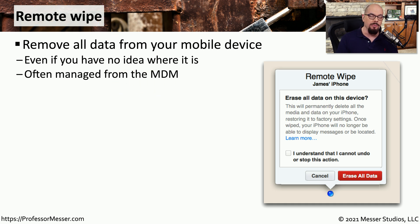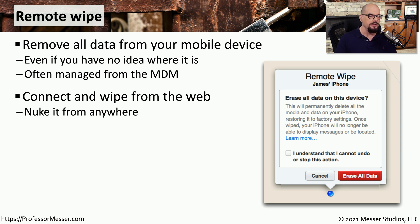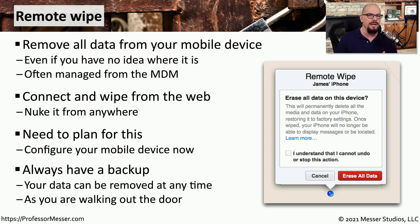Remote wipe is usually managed from the mobile device manager, and it allows you to click a button and erase all of the data on the device, even though you may not know exactly where the device is. If the device is connected to a cellular or wireless network, it will receive the wipe command. This should be configured before the device is deployed. You should always have a backup of your data, so that once you delete everything and replace the unit, you can restore from backup and be up and running quickly.